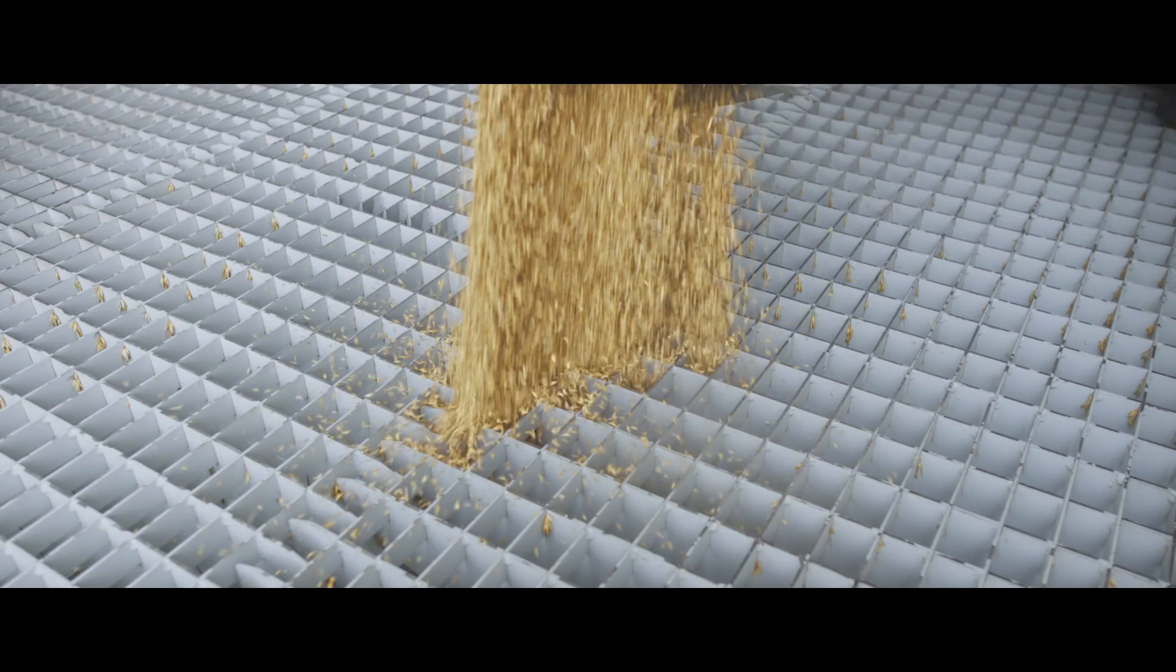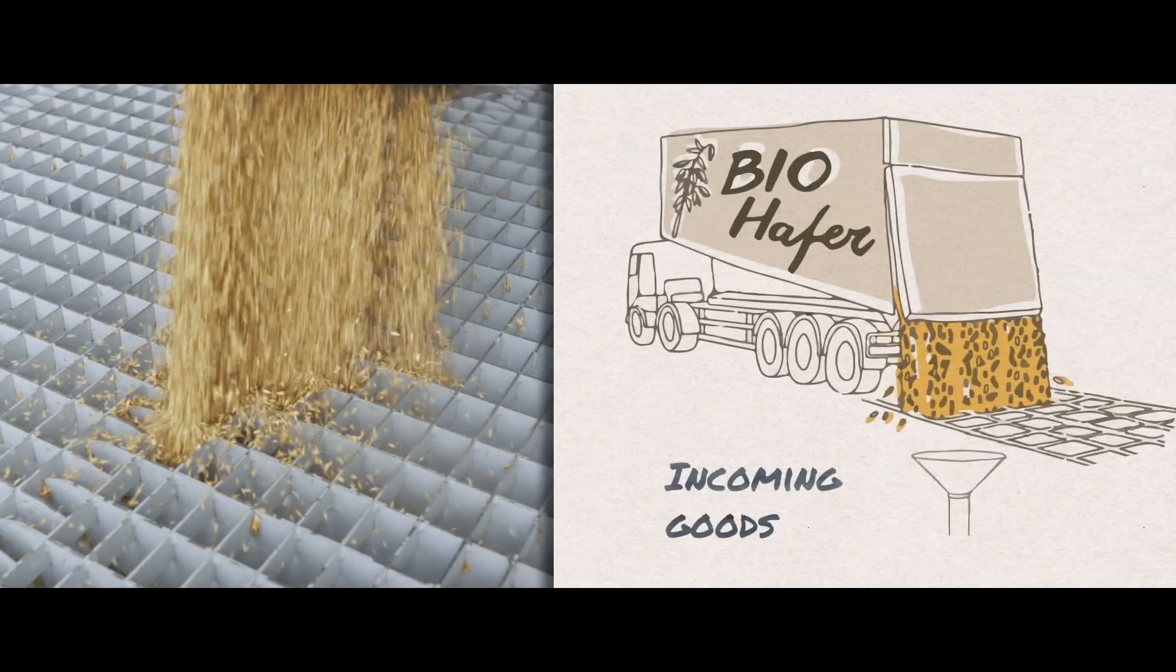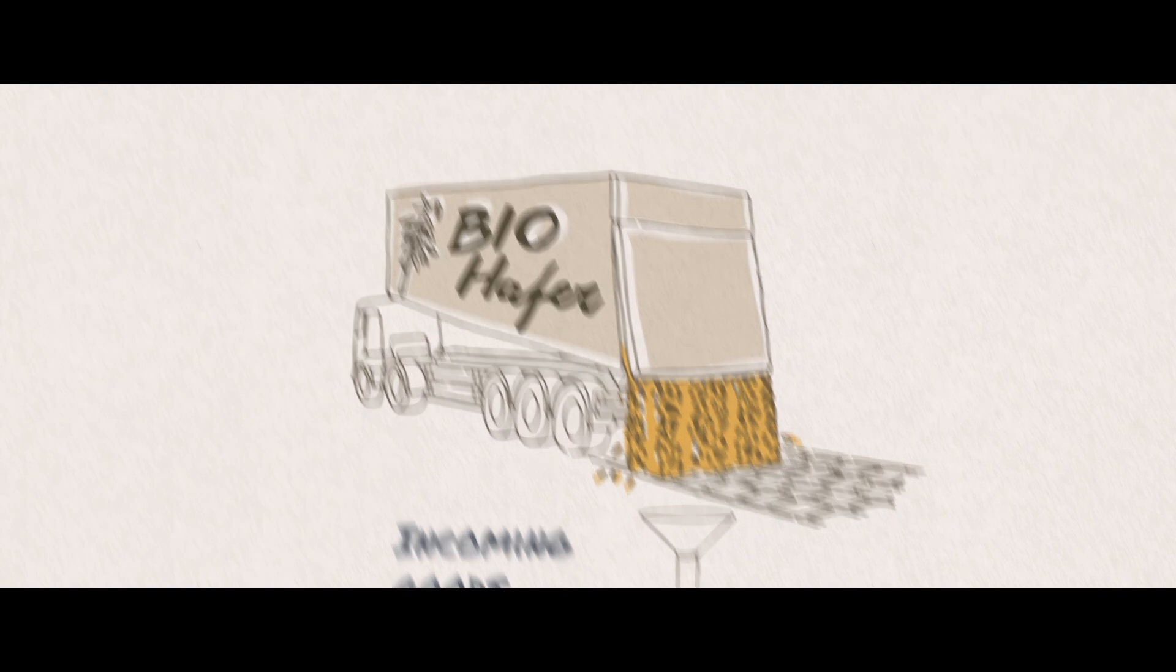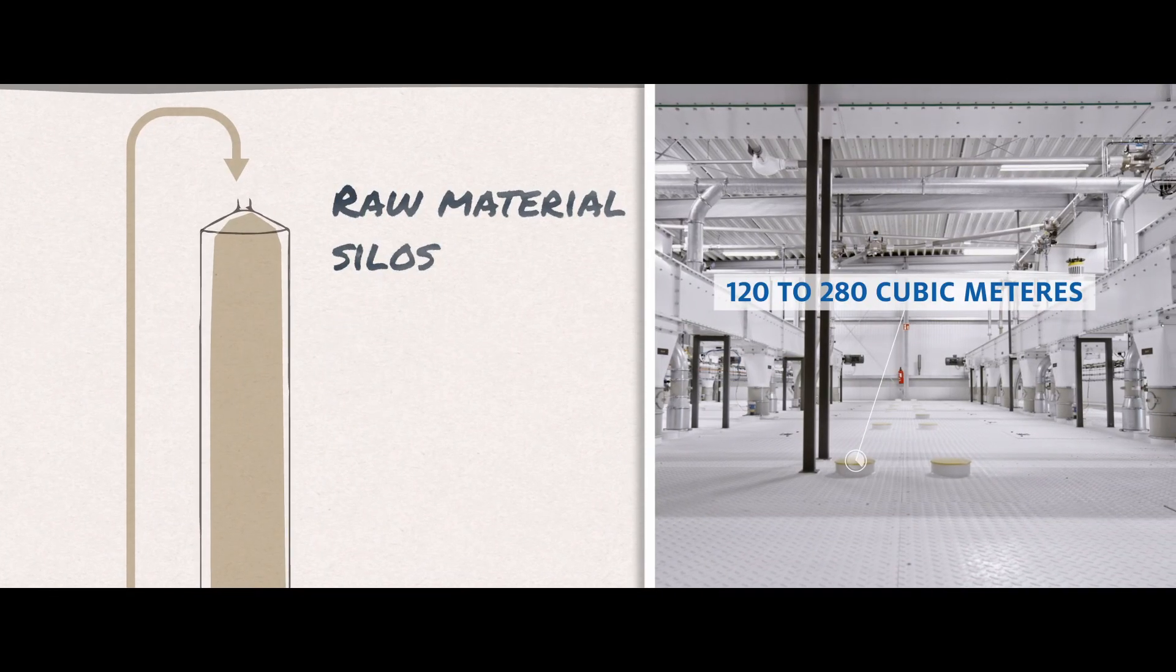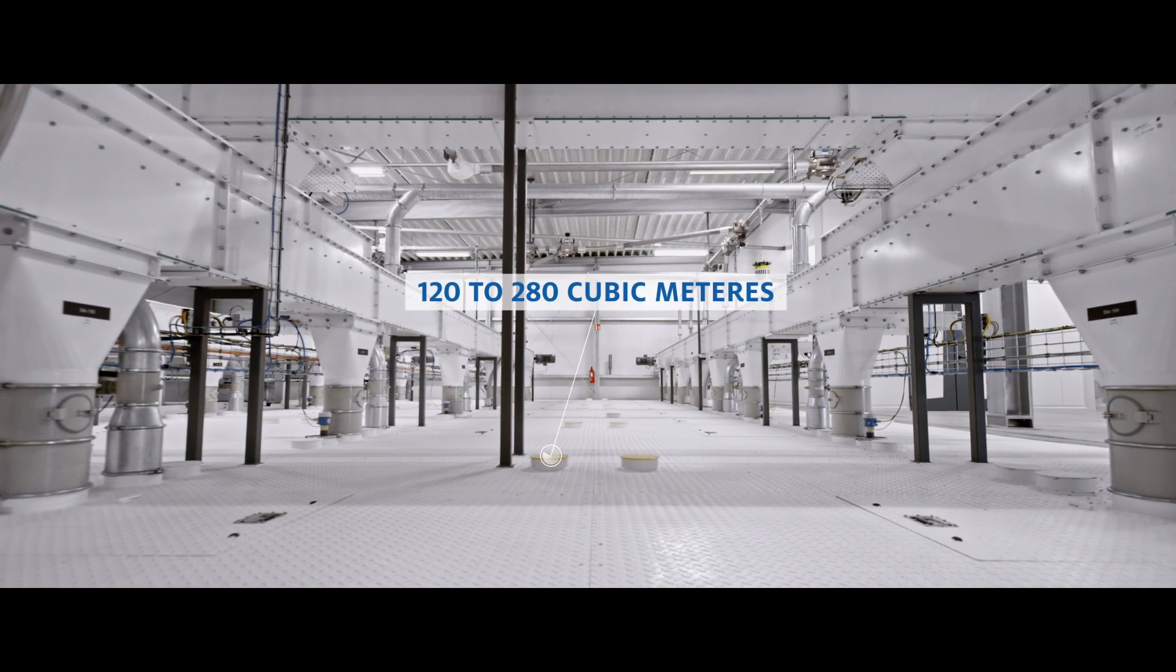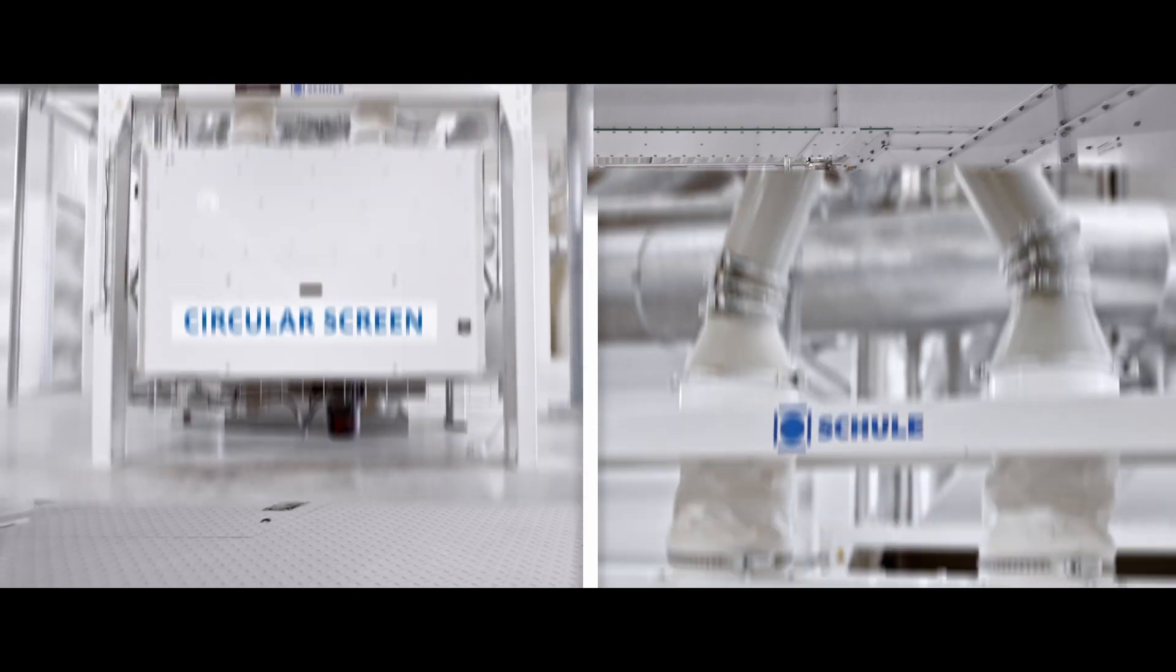Every hour, up to 70 tons of oats are delivered to the mill for gluten-free organic oats. After the oats have been pre-cleaned by screening and sifting, they are conveyed to one of the 23 raw material silos at a height of 40 meters.